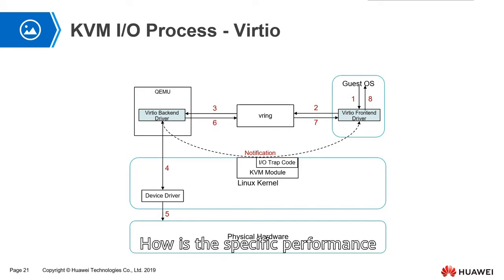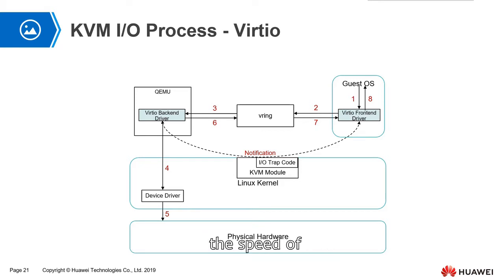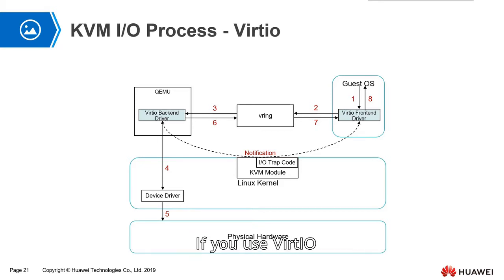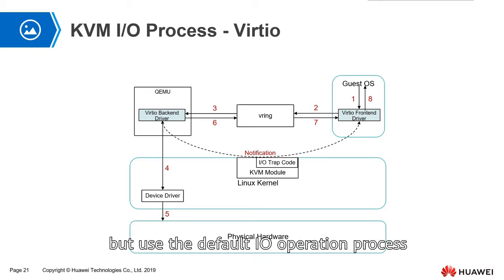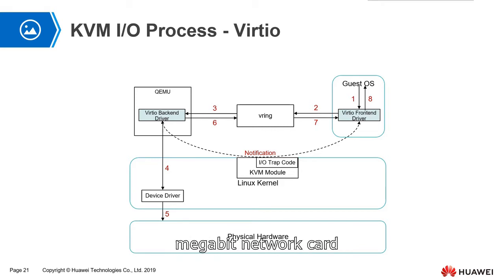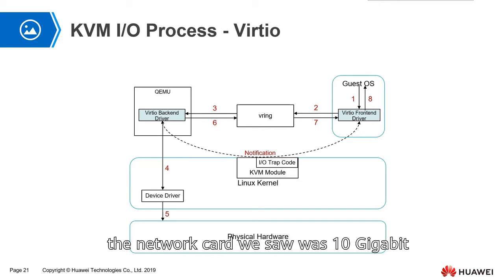How does this improve specific performance? Under the Windows operating system, you can observe the speed of virtual machine network cards. If you use the default IO operation process without VirtIO, the virtual machine sees a 100 megabit network card. If you install VirtIO drivers, the network card we see becomes 10 gigabit — that is the performance improvement.